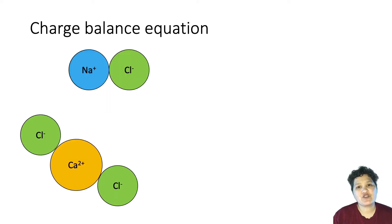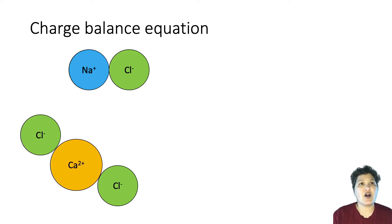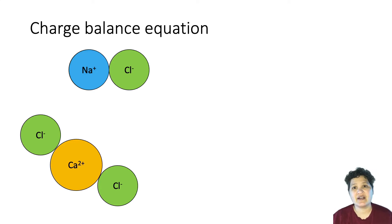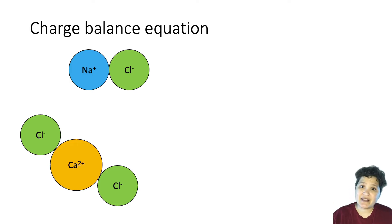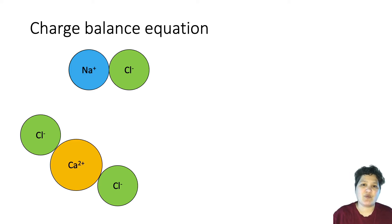Let's talk about the charge balance equation. When we first learned about ionic compounds, we talked about how you have to put in the right number of anions so that the negative charge balances the positive charge on the cation. The charge balance equation is basically the same thing, except on a much more massive scale.